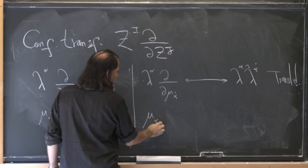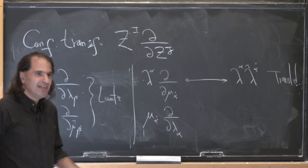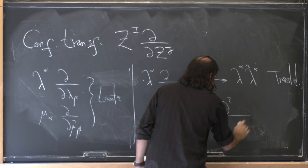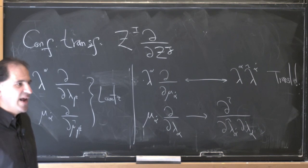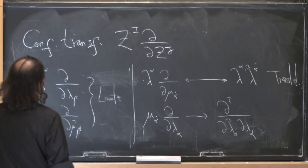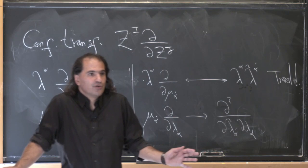Finally, there's the last one: mu-alpha-dot · d/dlambda-alpha. What is that back in terms of lambdas and lambda-tildes? Well, mu is d/d(lambda-tilde). So the special conformal transformations are these funny quadratic things — they're d²/d(lambda-tilde) · d/dlambda. So once again, conformally invariant amplitudes are things annihilated by Lorentz transformations, translations — we put a delta function for momentum conservation — and this funny quadratic operator. But in twistor space, it's just a 4×4 linear transformation.